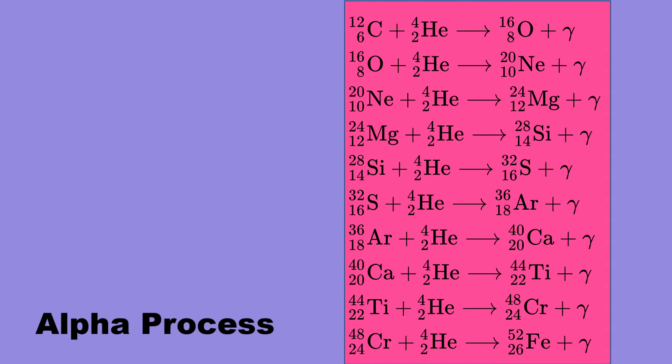The alpha process is where we fuse elements starting with carbon with alpha particles to form new elements. The alpha process then combines helium with carbon to produce heavier elements, but only those with an even number of protons.